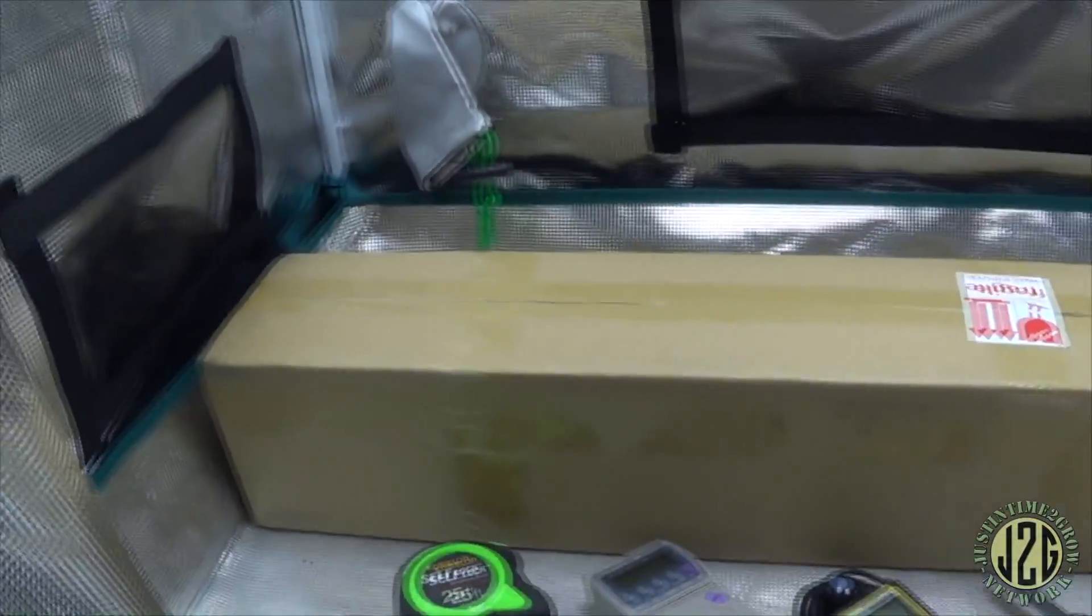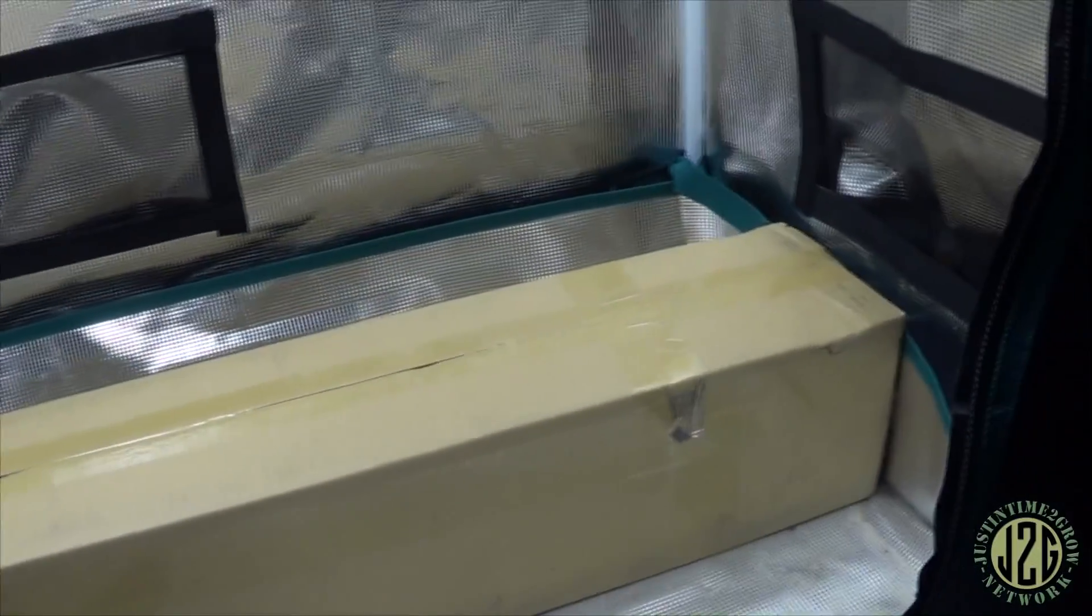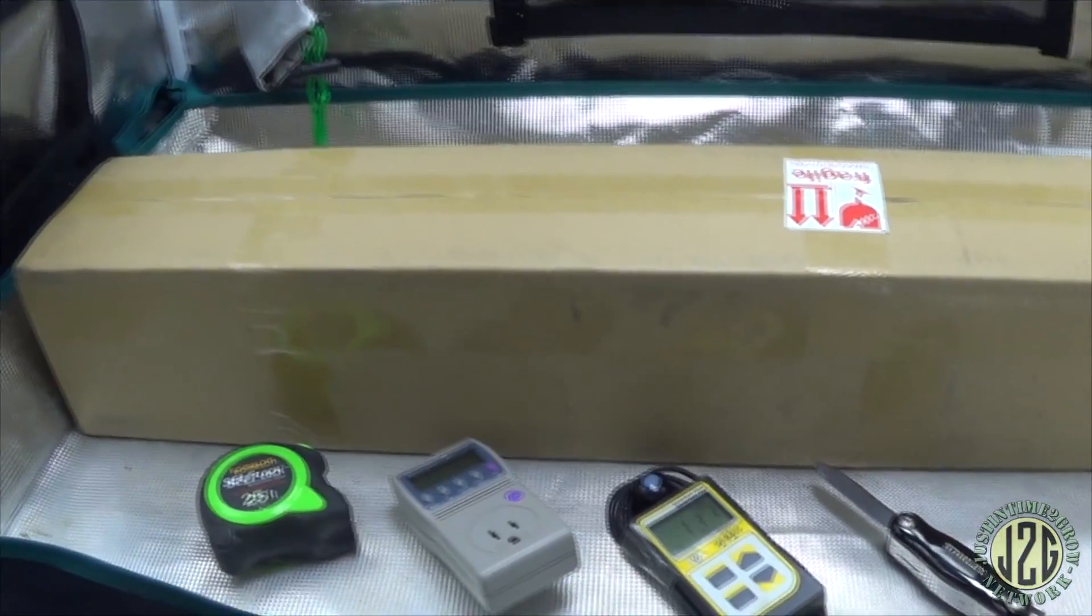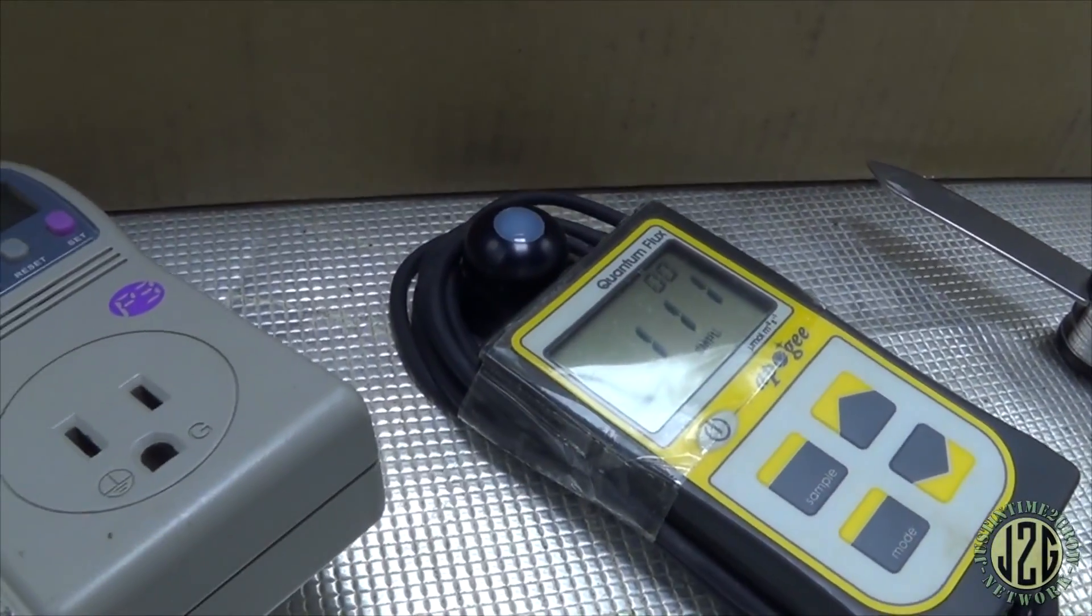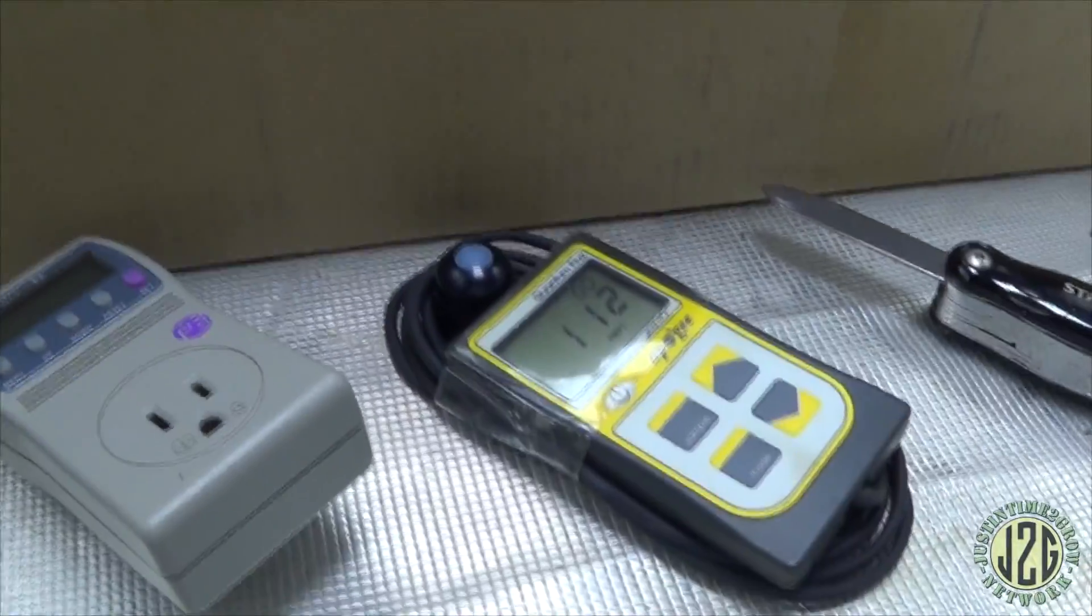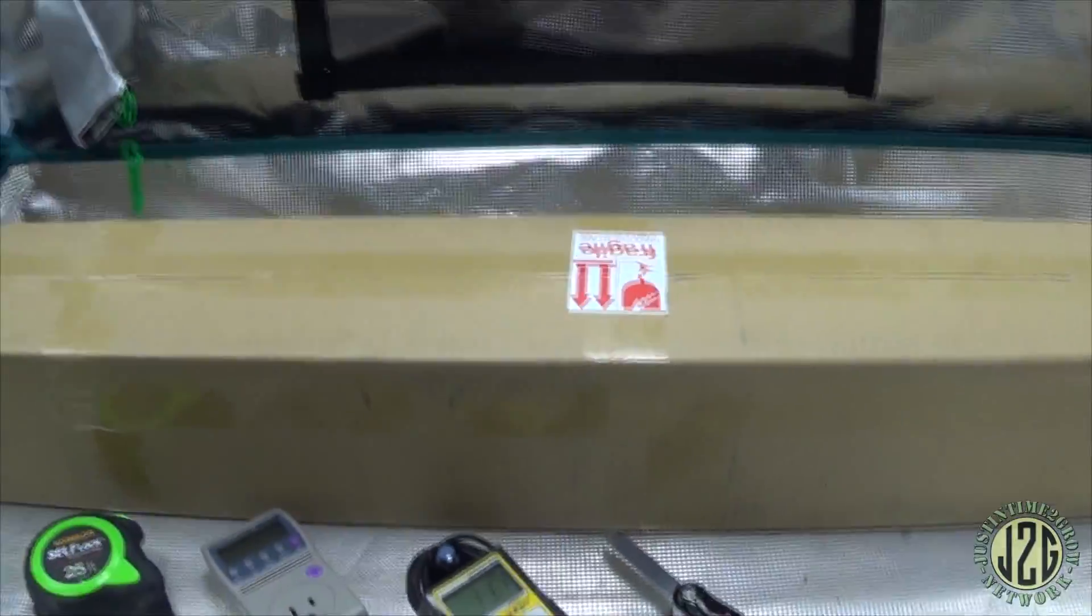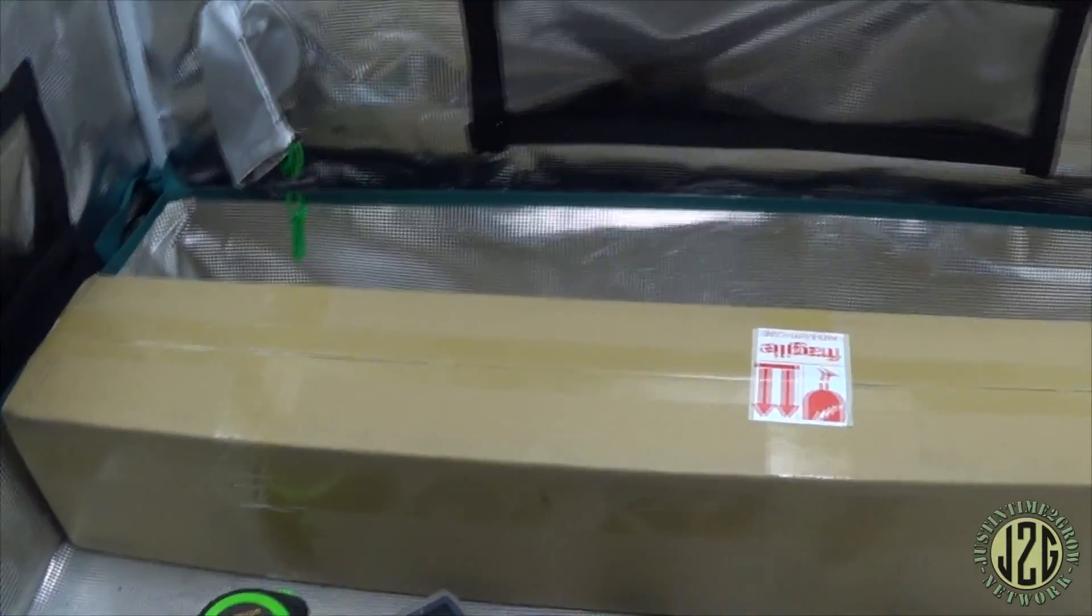It goes all the way edge to edge on the tent. In this four-foot tent we're hitting about 111 micromoles from the TS 1000 all the way up here, all the way down to the floor. Not too bad, but yeah, let's bust open this box and see what we got inside here.